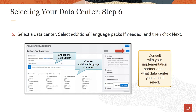Then you have to select the data center as well as any additional language packs if you need any. You can select any available data center in the region where your order was booked. All available data centers will appear in the list except those that have a capacity constraint. If you're working with an implementation partner, do consult with them about which data center to select.